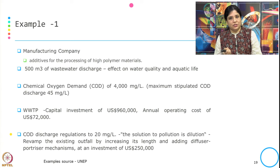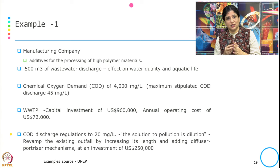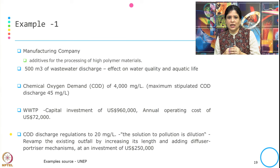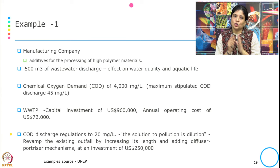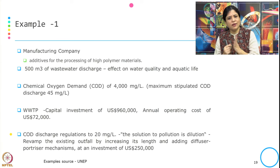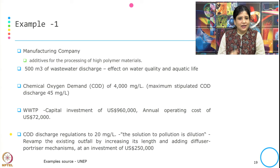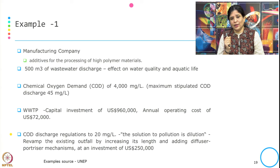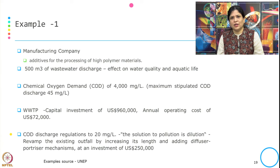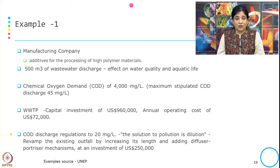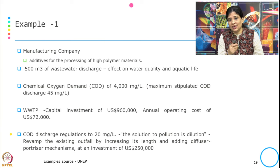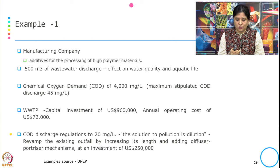The regulation changed and the COD discharge regulation was now limited to 20 mg per litre. The solution to pollution here was dilution. They revamped the existing outfall by increasing its length and adding a diffuser mechanism at an investment of 250,000 US dollars. Because of the change in regulation limiting COD discharge, they made these changes in their process.